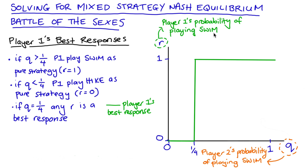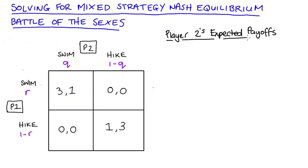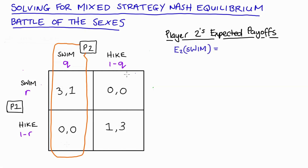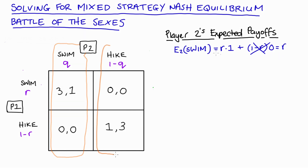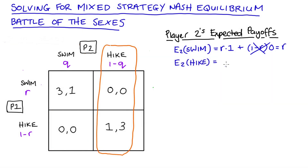Now let's do the same for player two's best responses to player one's possible plays of r, starting by constructing player two's expected payoffs. If player two plays swim, the expected payoff is: with probability r, player one also plays swim so player two gets one; and with probability 1 - r, player one plays hike so player two gets zero. This simplifies to r. If player two plays hike, the expected payoff is: with probability r, player one plays swim so player two gets zero; with probability 1 - r, player one plays hike so player two gets three. This simplifies to 3 - 3r.